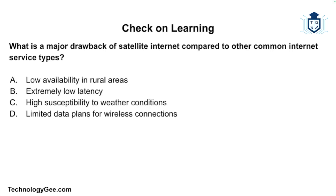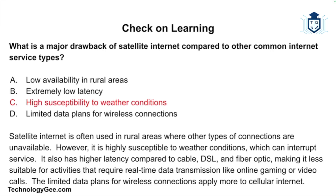Question 3: What is a major drawback of satellite internet compared to other common internet service types? Is it low availability in rural areas, extremely low latency, high susceptibility to weather conditions, or limited data plans for wireless connections? The correct answer is high susceptibility to weather conditions. Satellite internet is often used in rural areas, but it is highly susceptible to weather conditions which can interrupt service. It also has higher latency compared to cable, DSL, and fiber optic, making it less suitable for real-time activities like online gaming or video calls. Limited data plans apply more to cellular internet.